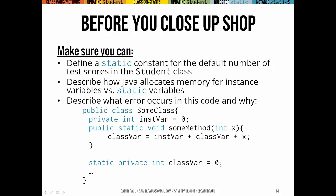Before we close up, the big ideas to be familiar with are: how to define a static constant — for something like the default number of test scores in the Student class — and how Java allocates memory for instance variables versus static variables and when that happens during program execution. Also think about what the error in the example code is and why there's a mistake, and what we could do to fix it.